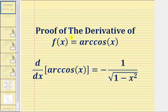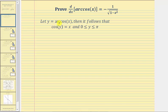Welcome to a proof of the derivative of f of x equals arc cosine x. We'll prove the derivative of arc cosine x with respect to x equals negative one divided by the square root of the quantity one minus x squared. So to begin, we'll let y equal arc cosine x.